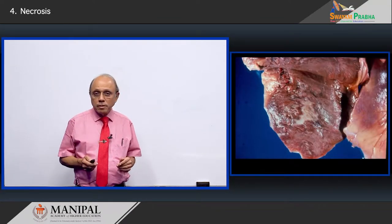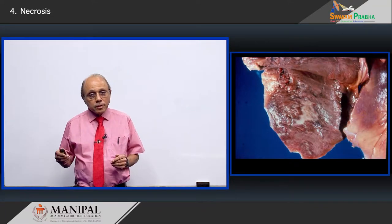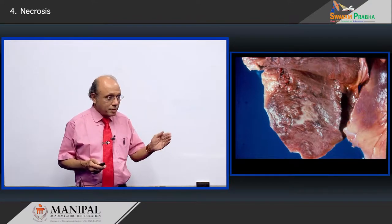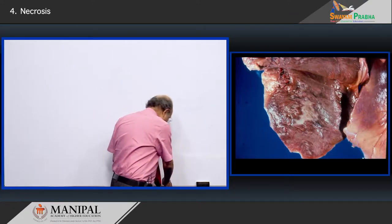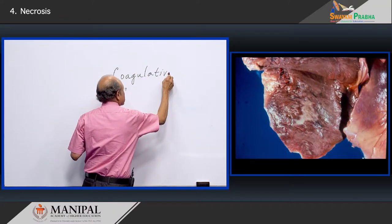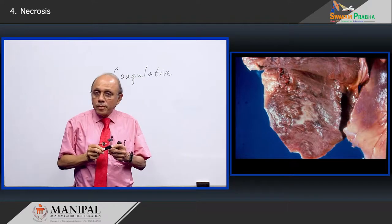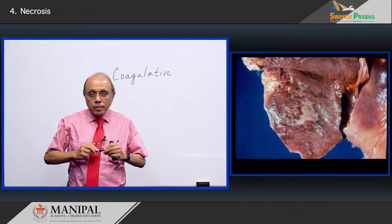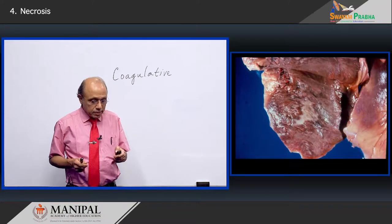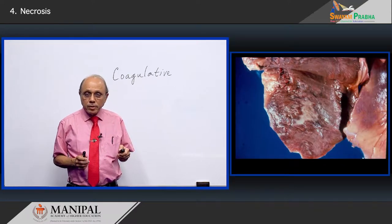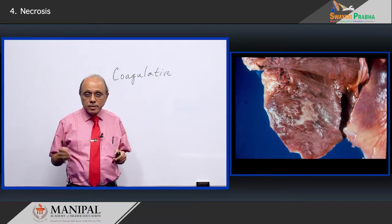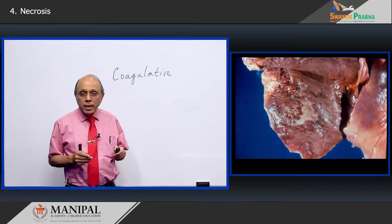The first type of necrosis we encounter, which is of tremendous clinical significance, is what we see in myocardial infarction. This type of necrosis is referred to as coagulative necrosis, so called because of the coagulation of proteins. It happens not only in myocardial infarction but also in a splenic infarct. The significant morphological aspect — the gross aspect — about coagulative necrosis is that the infarcted area appears pale.